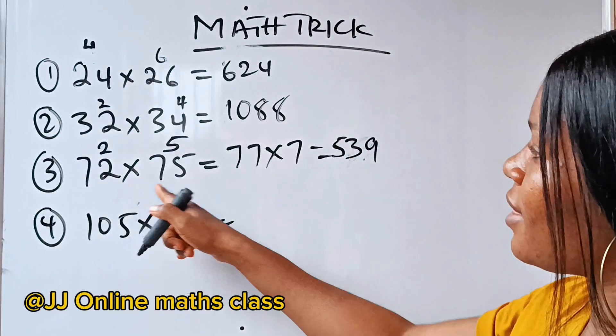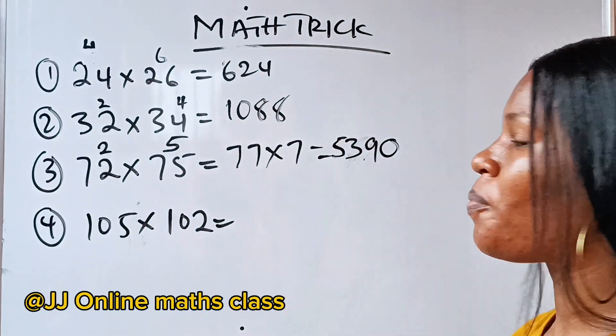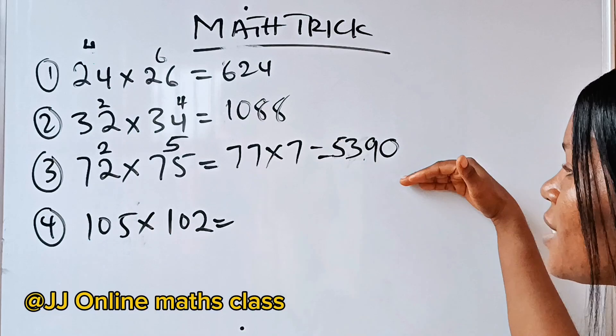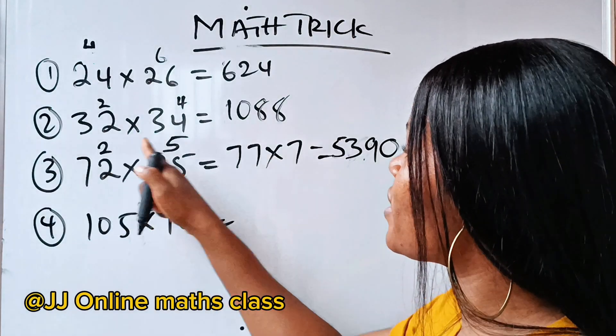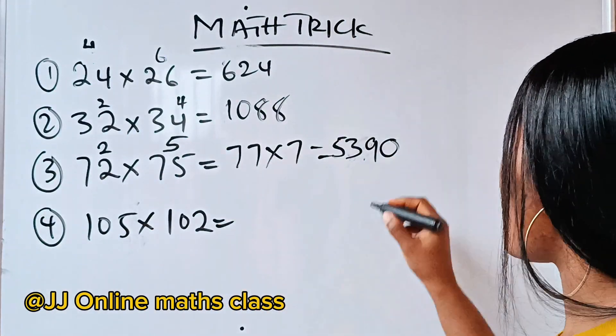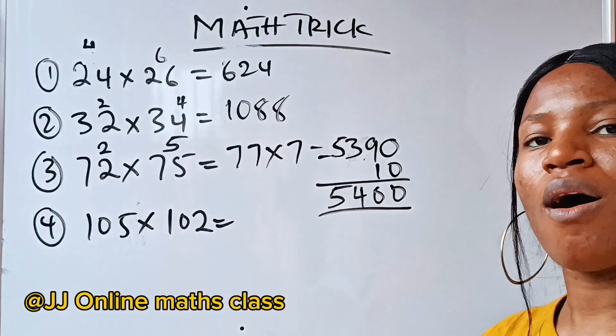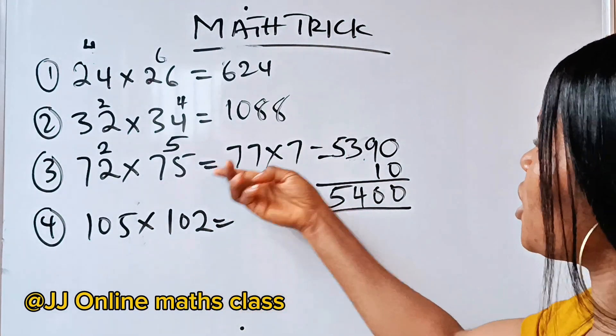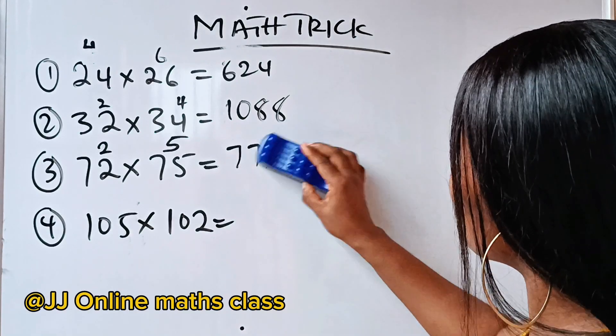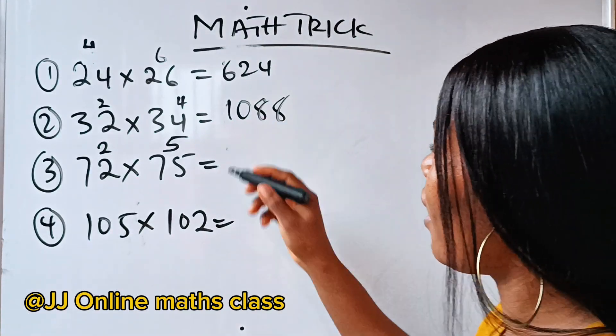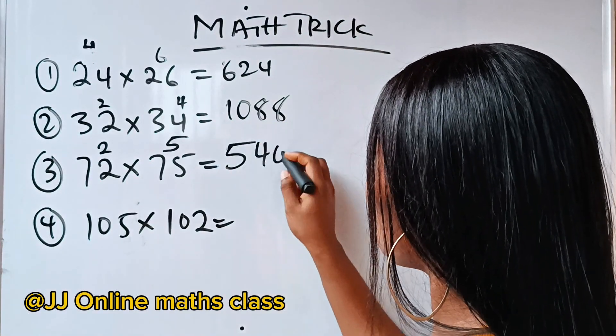Now, because this is a 10, we are going to add 0 in front. Then, we keep this aside. Now, we have 2 times 5, which is 10. We are going to add 10 to this place. So, we are going to have 5,400. So, the solution to this is 5,400.